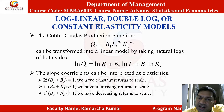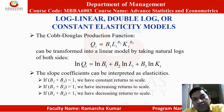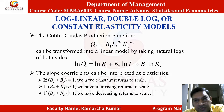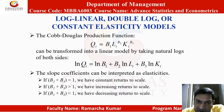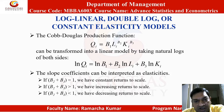The slope coefficients can be interpreted as elasticities. If B2 + B3 = 1, we have constant returns to scale. If B2 + B3 > 1, we have increasing returns to scale. If B2 + B3 < 1, we have decreasing returns to scale.